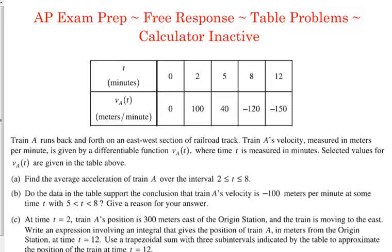Train that goes back and forth on an east-west section of railroad track. Its velocity, measured in meters per minute, is given by a differentiable function where t is measured in minutes. Select values for the velocity are in the table. So, find the average acceleration. Well, what's the relationship between acceleration and velocity? It's the derivative. So if we are finding the average acceleration,